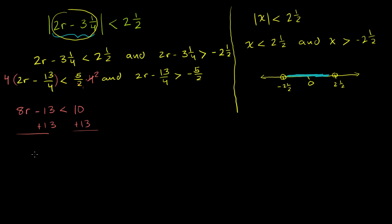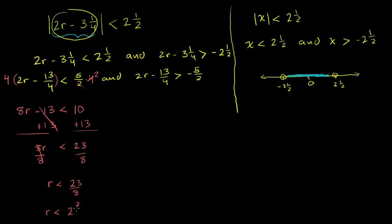Adding 13 to both sides, those cancel out and we get 8r is less than 23. Divide both sides by 8 — no inequality swap since we're dividing by a positive number — and we get r is less than 23 eighths, or as a mixed number, r is less than 2 and 7 eighths. That's one condition, but we still have to worry about the other condition — there was an 'and.'